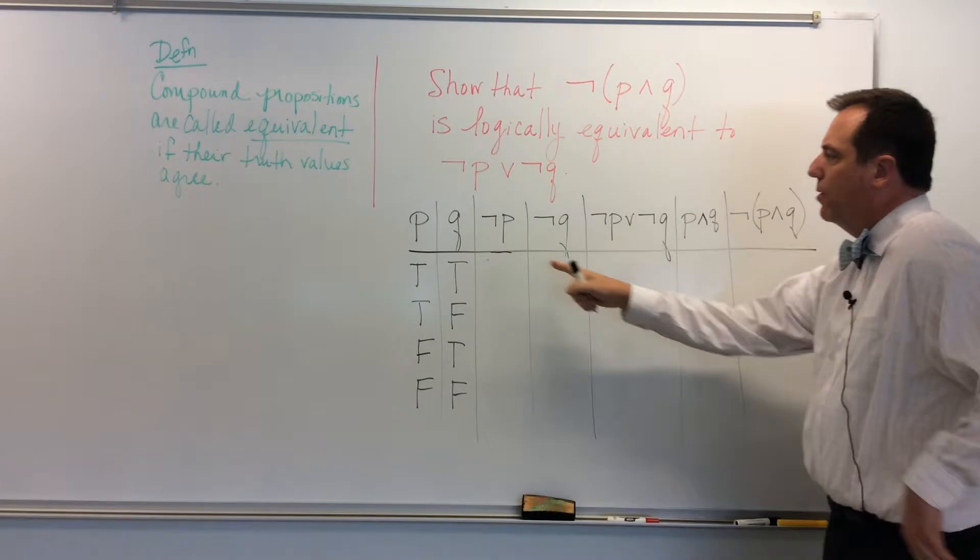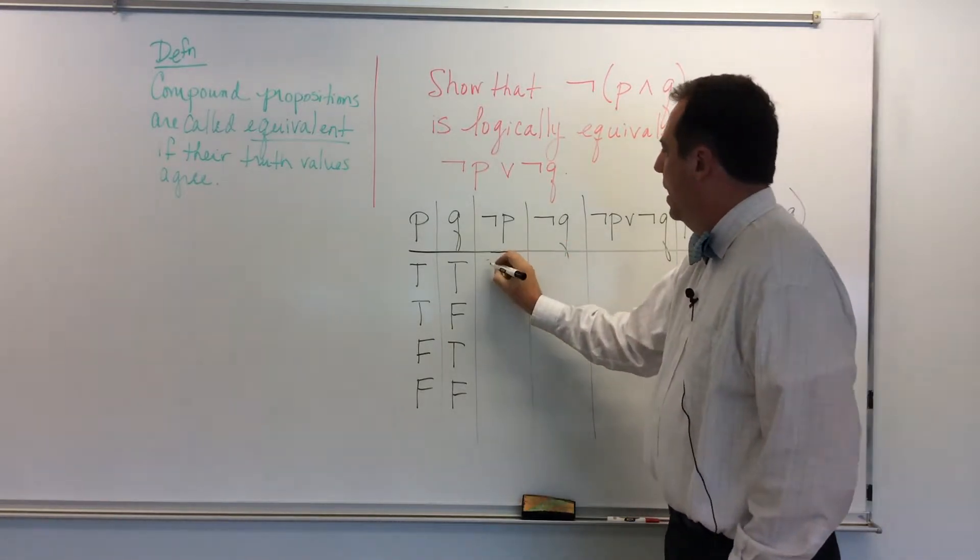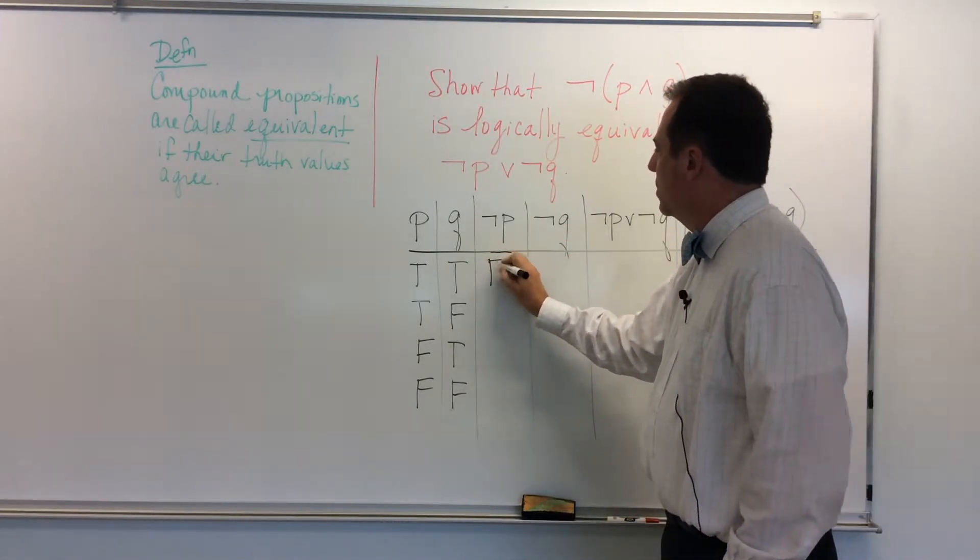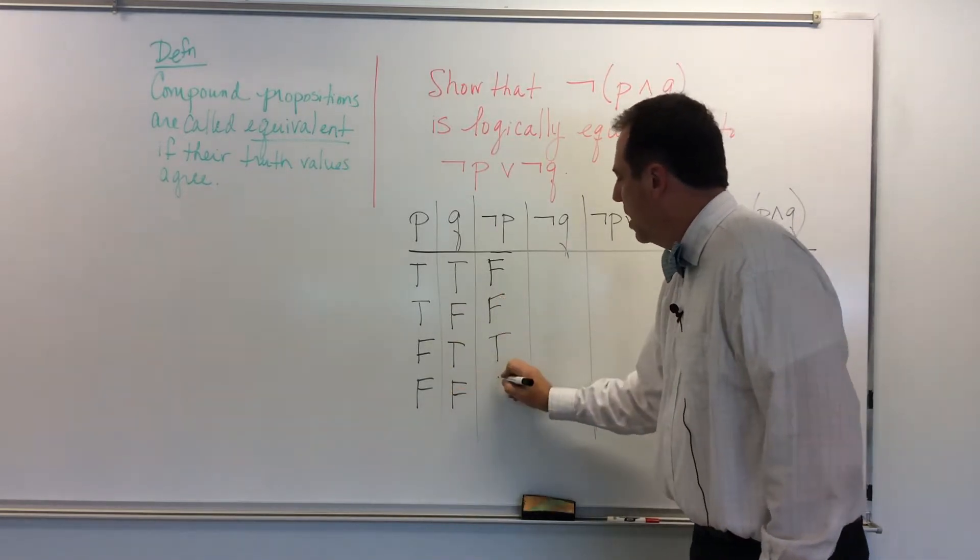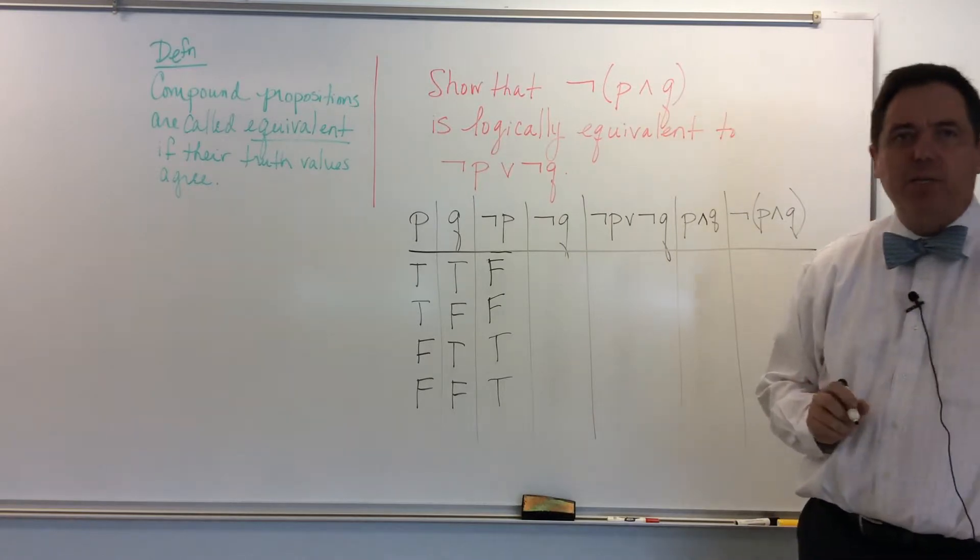And here in the first column, I just have to negate P. And so not true means false. Not true means false. Not false means true. We won't spend too much time on it. And not false means true.